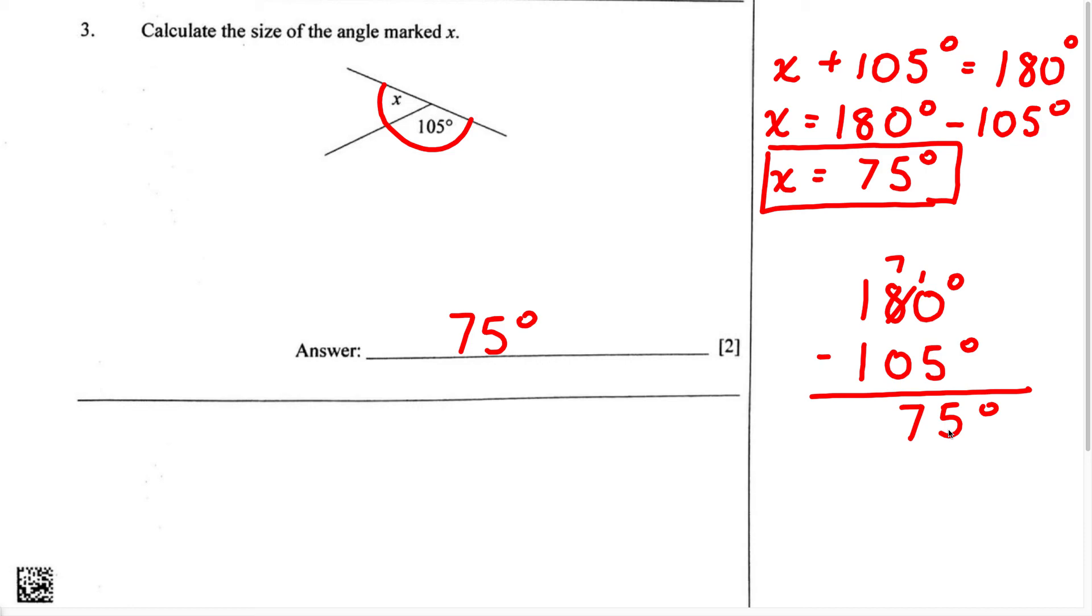Now if you need just a little more help with the thought process, this is a way to break it down. Once you have identified this is a straight angle, and these two angles are supplementary, which means they add up to 180 degrees, we're just going to write an equation. We have two angles, therefore we said angle X plus 105 degrees. It's going to add up to 180 degrees.